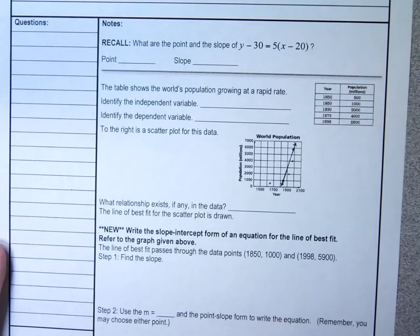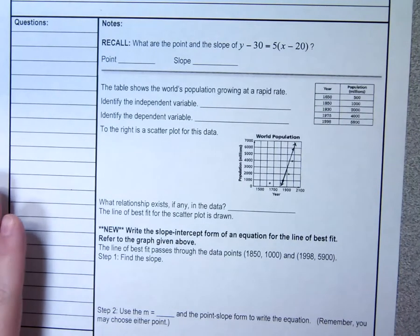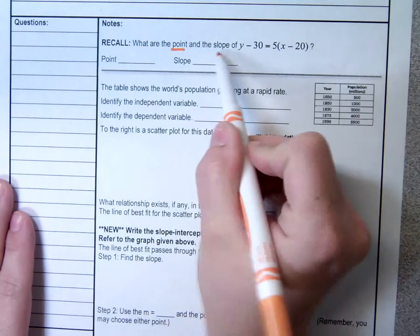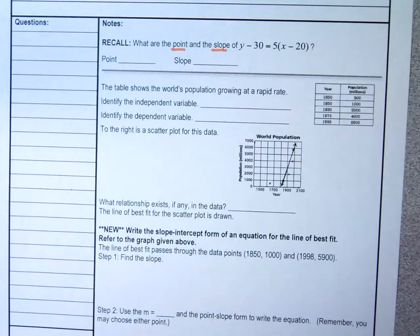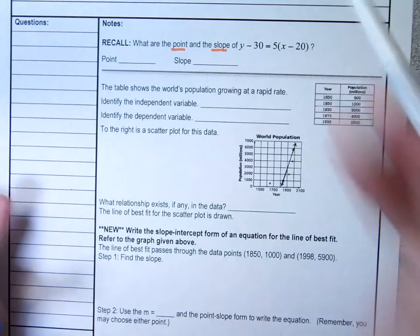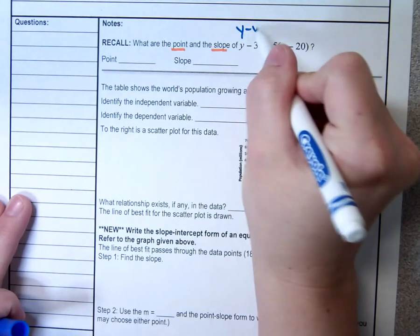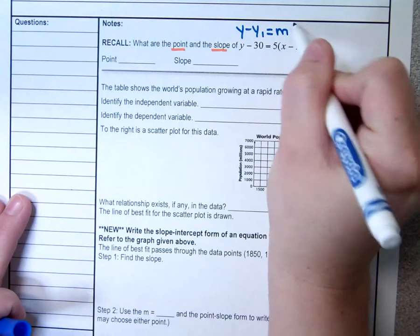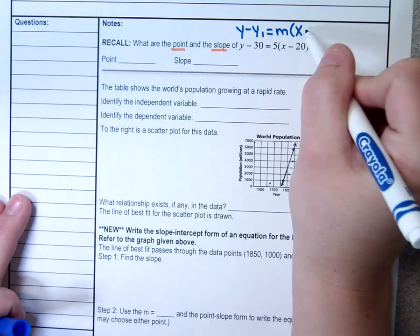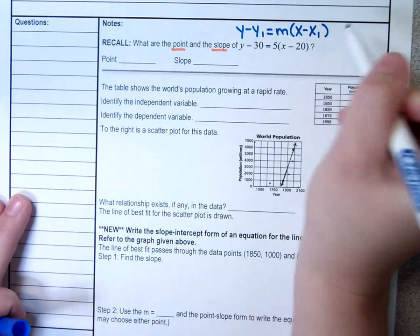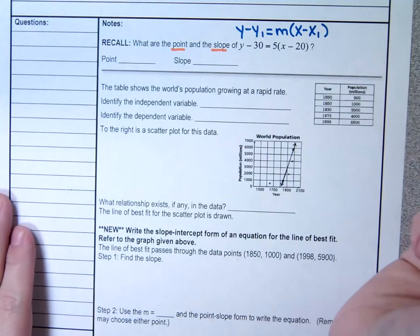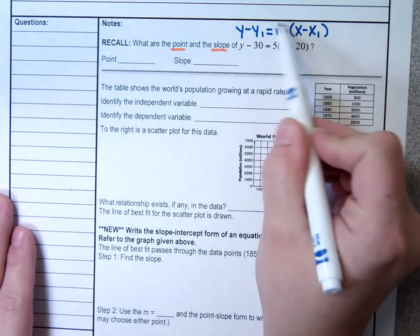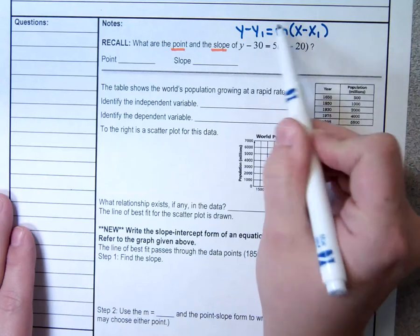This first part we are recalling — what are the point and the slope of this equation right here? It looks like point-slope form. Remember point-slope form goes like this: y minus y1 equals m times x minus x1. The slope is the easiest to find. The slope is 5 — that's the number smushed in front of the parenthesis.